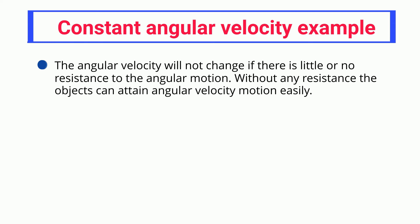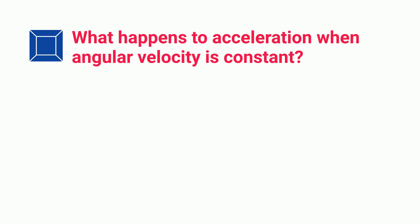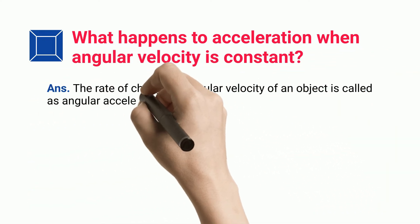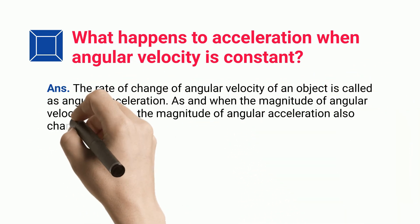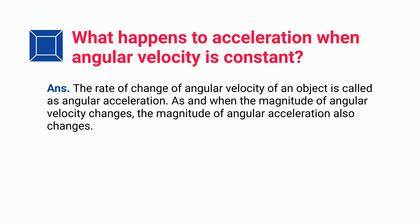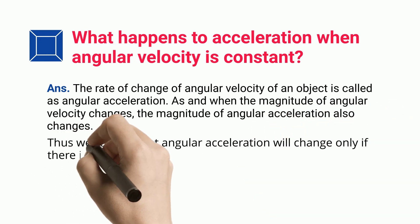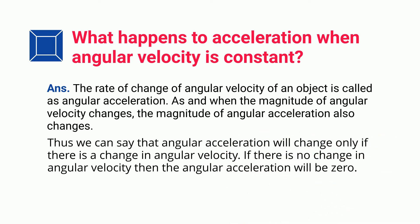What happens to acceleration when angular velocity is constant? The rate of change of angular velocity is called angular acceleration. When the magnitude of angular velocity changes, the magnitude of angular acceleration also changes. Therefore, angular acceleration will be zero if there is no change in angular velocity — i.e., when angular velocity is constant.